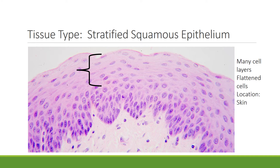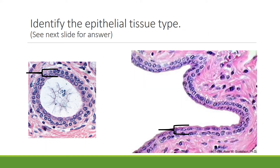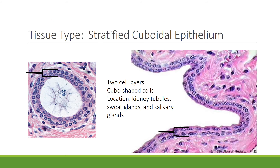This tissue type is stratified squamous epithelium — stratified because there are many cell layers, squamous because the cells are flattened, and the location is the skin. You find stratified squamous epithelium in areas of a lot of wear and tear. Typical of epithelial tissue, on one side there's blank space. The next tissue type is stratified cuboidal epithelium — stratified meaning more than one layer, cuboidal because the cells in those layers are cube-shaped, and it's epithelial because it lines or covers an organ, with white space on one side.